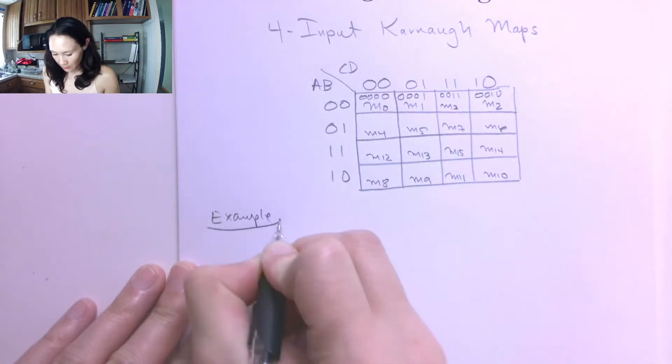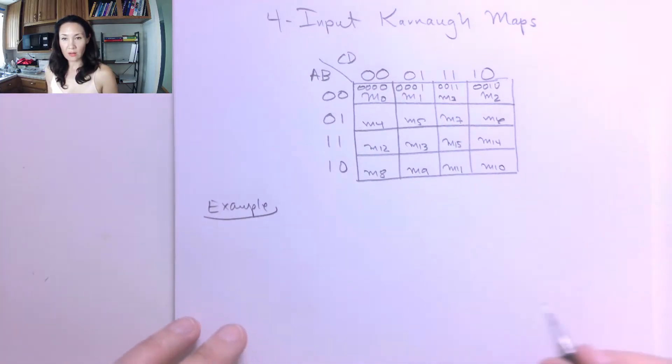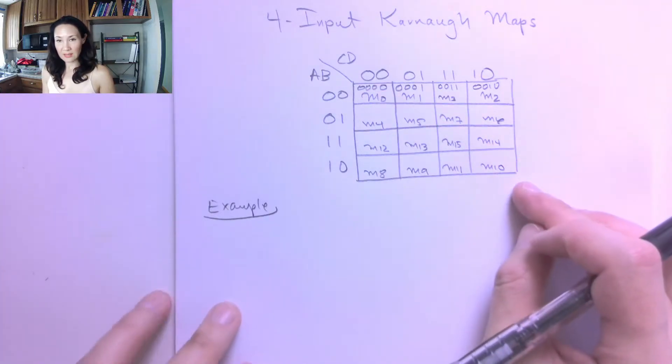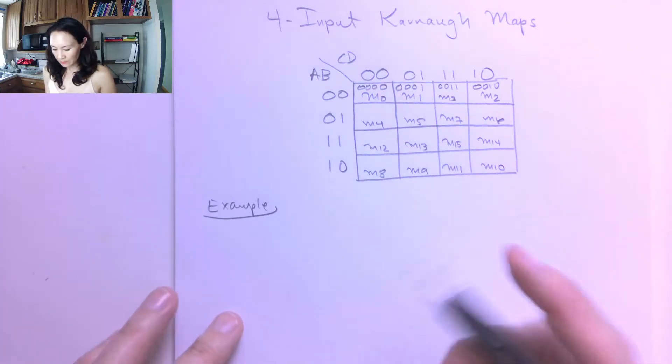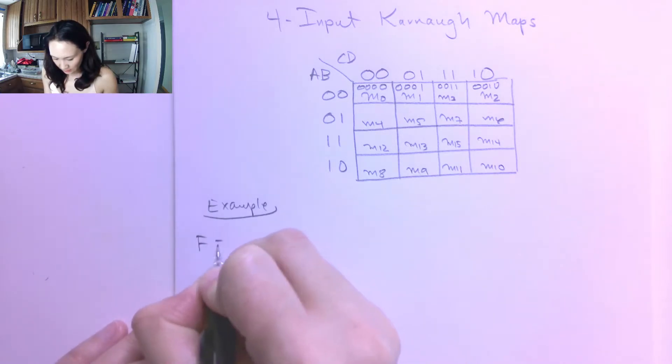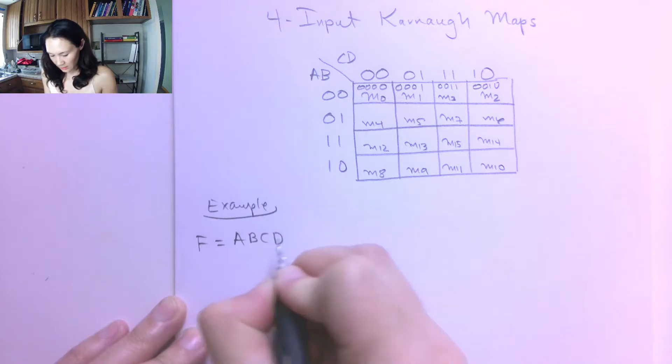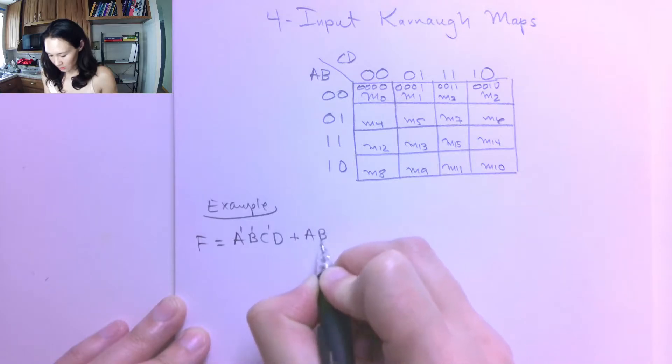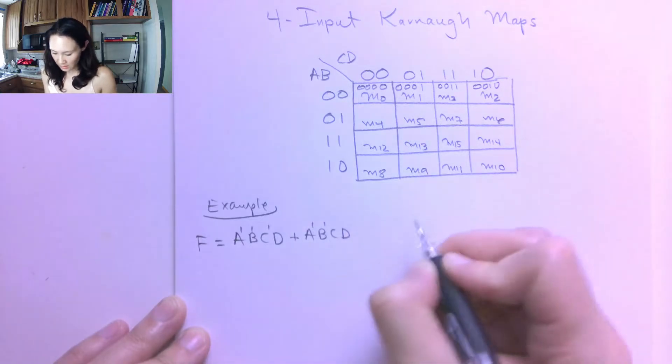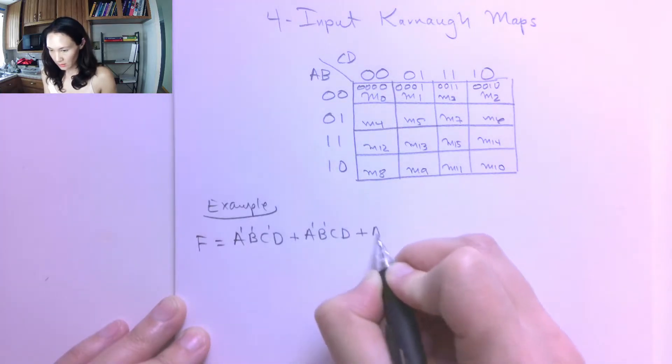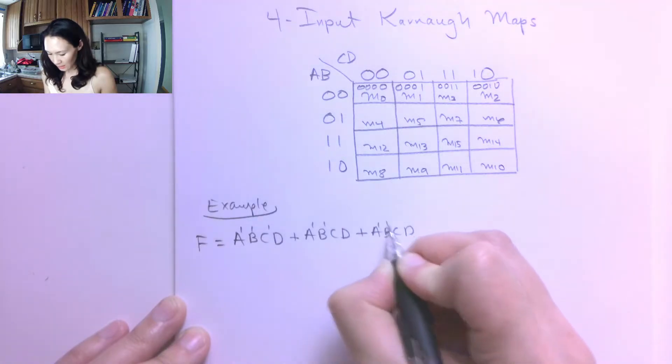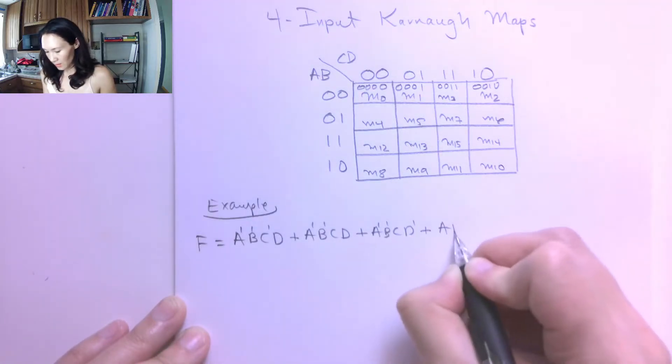In this example, suppose we are given our function f as sum of products form. I'm going to do the full expansion. Since there are 16 places on this table, it's going to be pretty big. So let's just suppose that f is A, B, C, D where A, B, and C are complemented, or A, B, C, D where A, B, and D are complemented, or A, B, C, D where A, B, and D are complemented, or A, B, C, D where C and D are complemented,